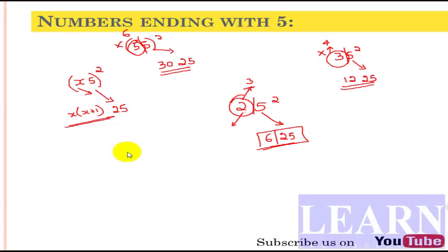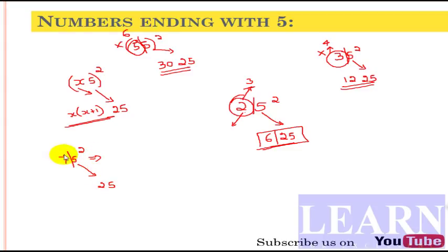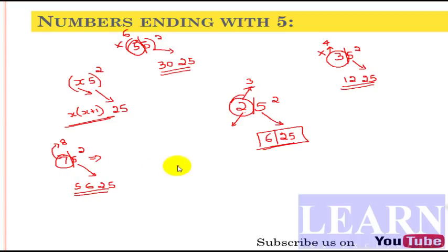Now let's try a slightly larger number: 75 squared. Split into two parts — the 5 gives 25. What is the next number after 7? It is 8. 7 times 8 is 56. So 75 squared is 5625. It's very easy!